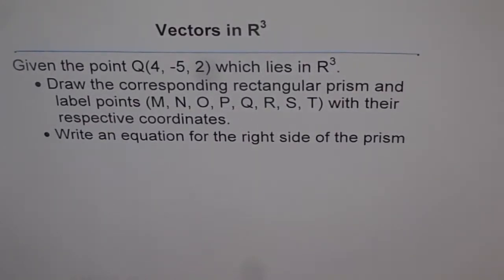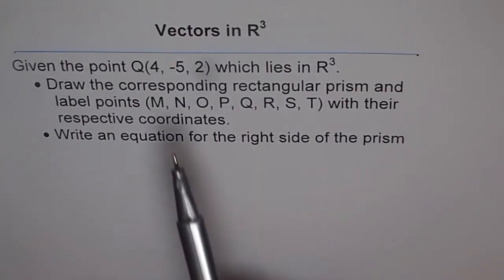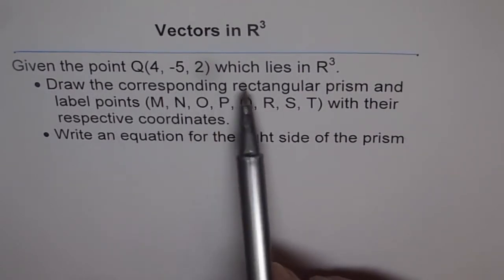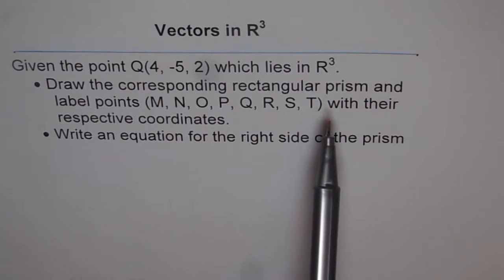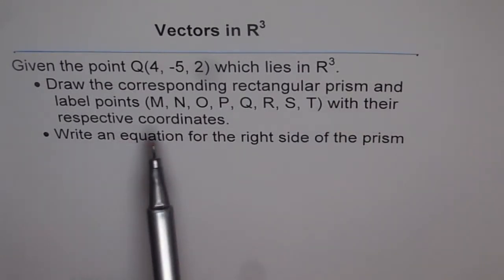Vectors in R³. Given the point Q as (4, -5, 2) which lies in R³, draw the corresponding rectangular prism and label points M, N, O, P, Q, R, S, T with their respective coordinates. Write an equation for the right side of the prism.